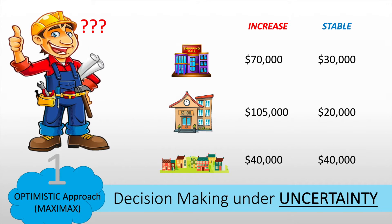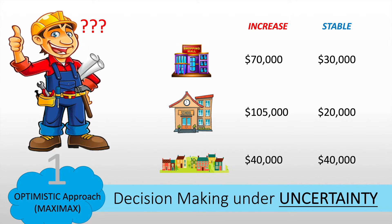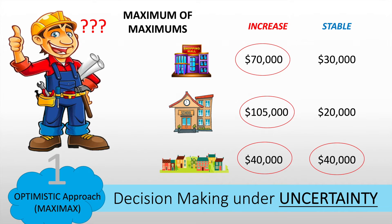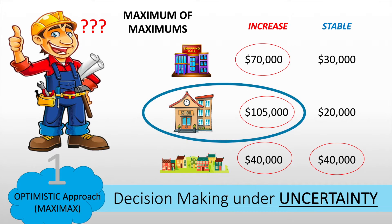Let's try the optimistic approach, or maximax — maximum of maximums. First, choose the maximum for each alternative: $70,000 for shopping mall, $105,000 for school, and $40,000 for houses. Then choose the maximum of these maximums, which is $105,000 — building the school. Therefore, with the optimistic maximax approach, Bob the Builder will choose to build the school.